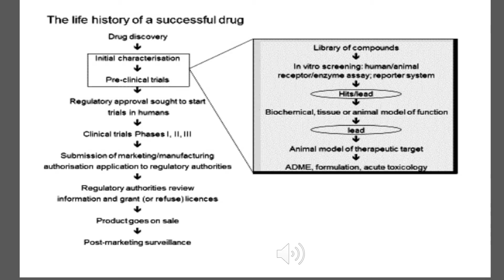The life history of a successful drug: drug discovery involves initial characterization and goes to pre-clinical trials. The HTS process is involved in between identification and pre-clinical trials, screening various compounds to identify hit molecules and lead molecules. The lead molecules then undergo pre-clinical trials — animal model studies, ADME properties, toxicity studies, etc. Then we submit the marketing and manufacturing authorization application. Once authorities give permission, we do the licensing process, the product is released into the market, and we conduct post-marketing surveillance.